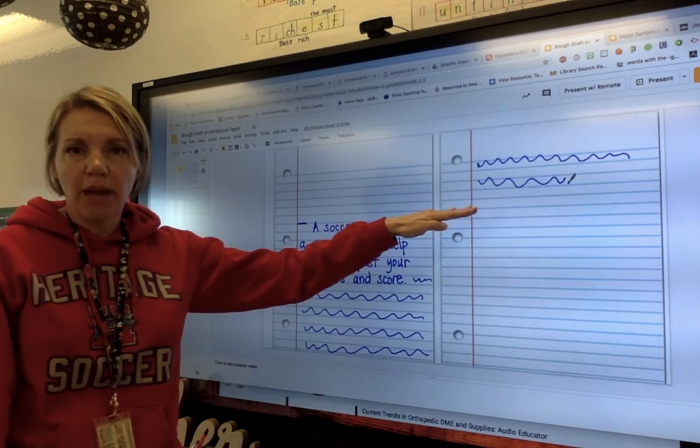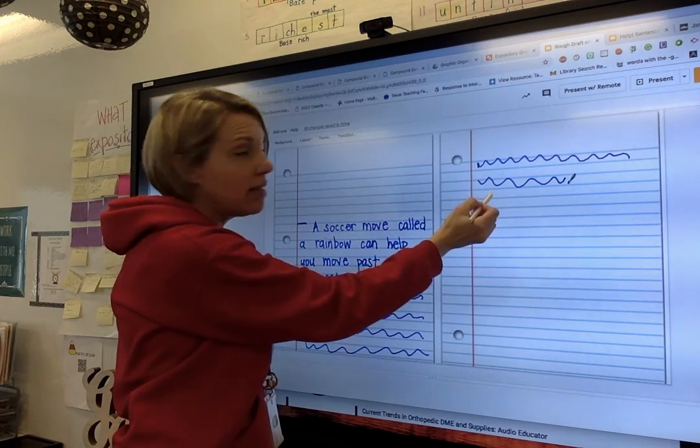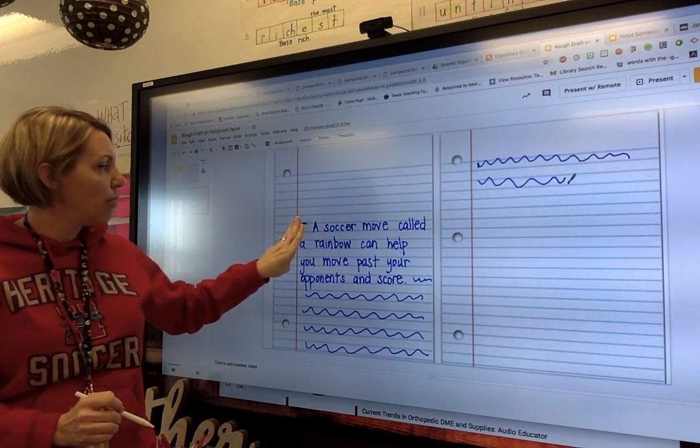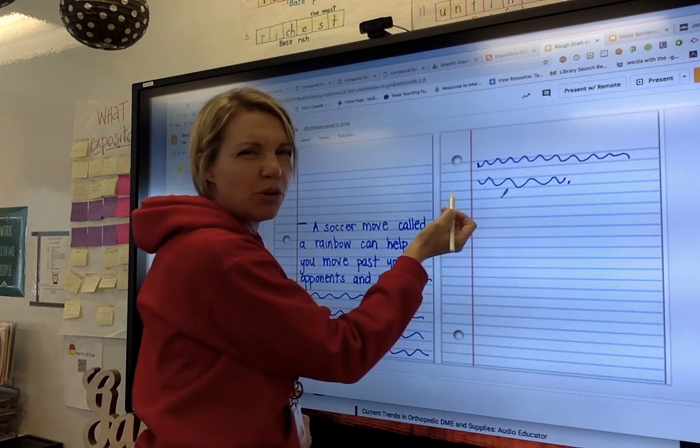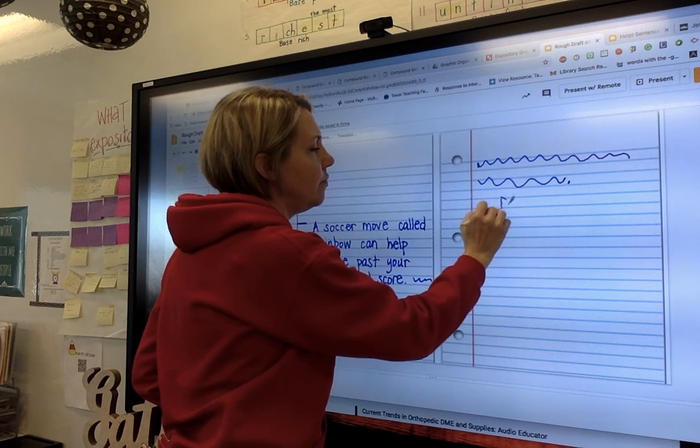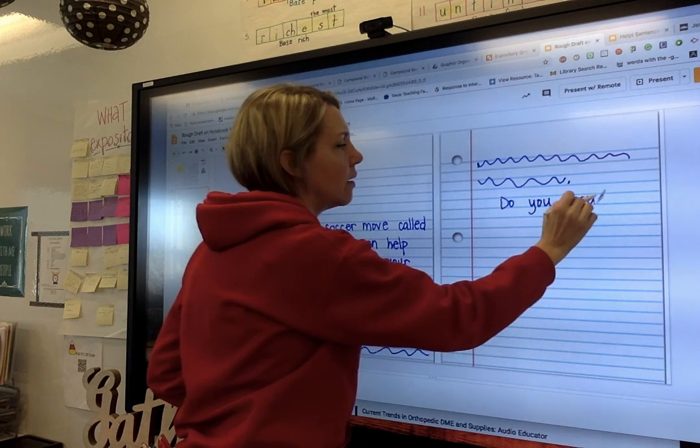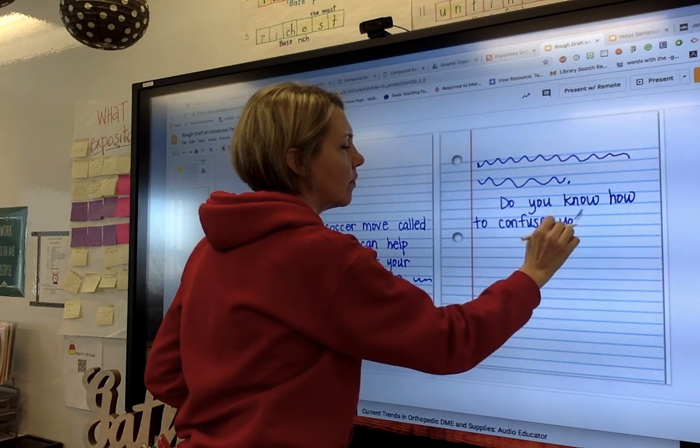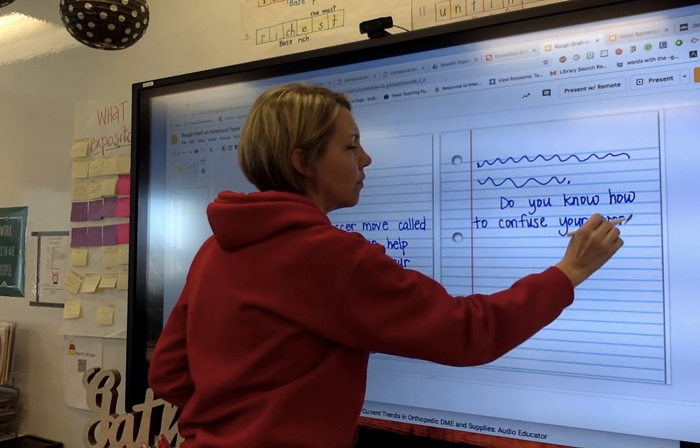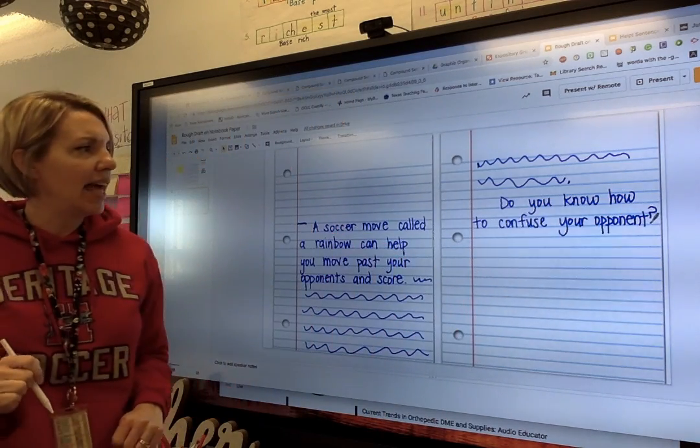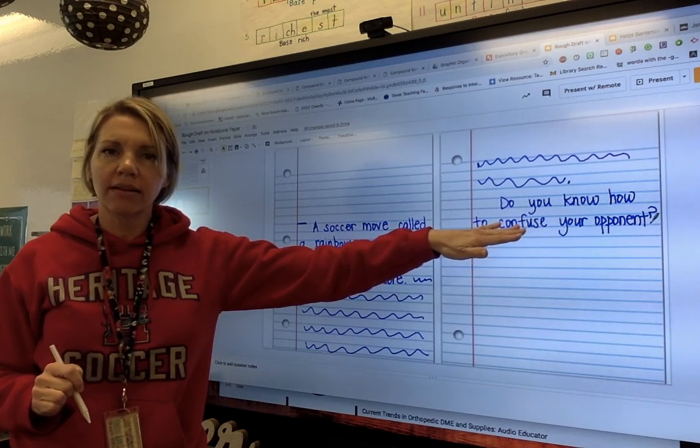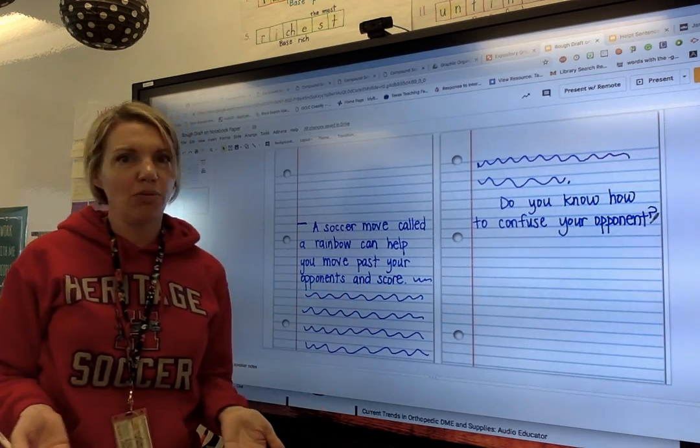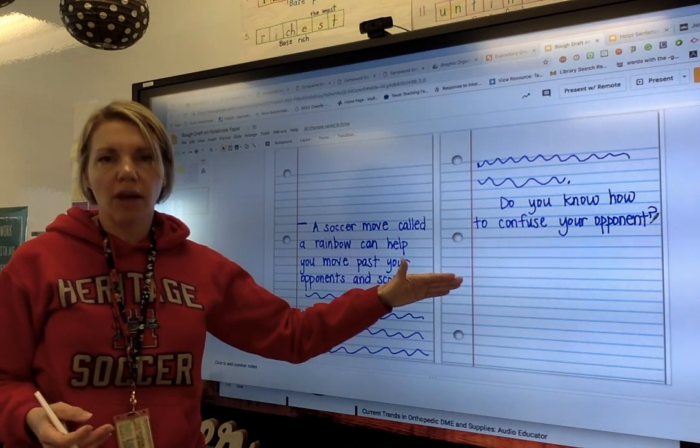When you're starting your second subtopic, you're starting a new paragraph. So you're dropping down to the next line, still skipping lines, but I'm indenting. Just like I indented here, I left a little bit of a space between this red line and where I started. About three finger spaces. So we're going to start here. And this time we're going to start with a question to make it a little different. So this time I said, do you know how to confuse your opponent? Then I'm setting up my reader to think, I don't, I want to know what you're going to tell me. I think I know, but maybe you have another idea I've never thought of. Then she can go into explaining her subtopic Inside versus Outside.